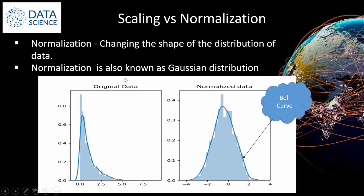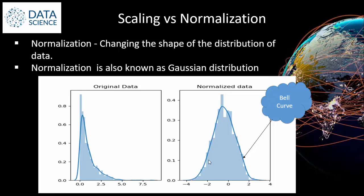Normalization is also called Gaussian distribution. Here comes the importance of probability and statistics — now you can understand why we must know mathematical knowledge. Here they are changing the original data to a normalized form. Why should it be in a normalized data format, or why should it be in a bell curve? The reason is if the variables are distributed normally, we can calculate the mean, median, and standard deviation, and it becomes easy to convert back and forth from raw scores to percentiles.